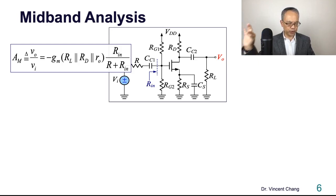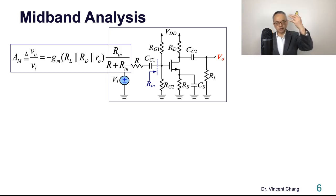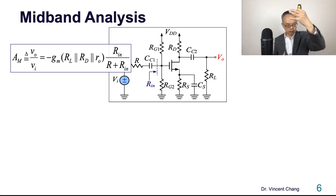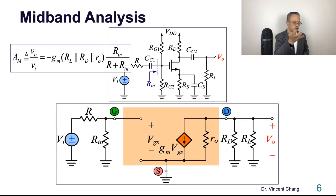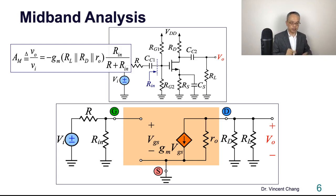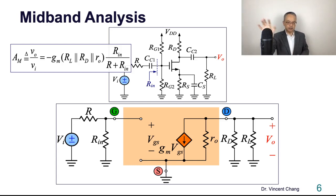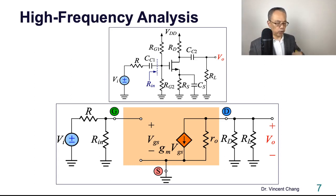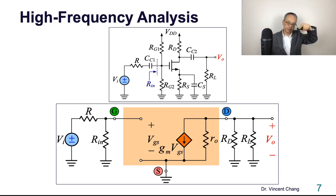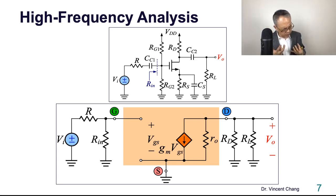The mid-band gain is negative GM times the parallel combination of RO, RL, and RD, multiplied by the divider ratio based on the equivalent circuit. This is the mid-band equivalent circuit: VO over VGS equals negative GM times the resistor combination, and the ratio between RS and RIN. When you move on to high frequency, the internal capacitance becomes manifested — its effect is revealed and becomes more pronounced at higher frequencies.